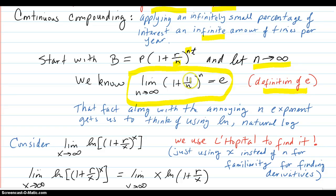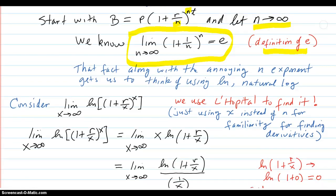So that's pretty interesting, and it's very similar to what we have up there. So this fact of this e relationship, along with the annoying N exponent that we can't really handle up there, gives us to think about using the natural log to bring that N down in the front.